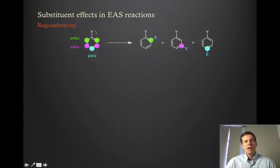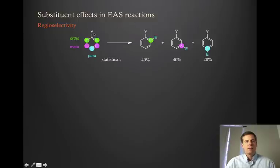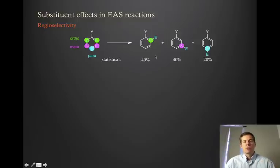Each substituent is going to have a preference for subsequent reactions to occur at one of these three positions, or sometimes two positions. So here we have the ortho, meta, and para products. If there was no preference that this substituent endowed to the aromatic ring, you would just expect a statistical mixture to result. There are five total positions, so you would expect 20% reaction to occur at each. Since the ortho positions are degenerate and the meta are degenerate, you would expect 40% ortho product, 40% meta, and 20% para if it were all statistical.